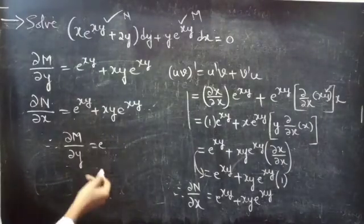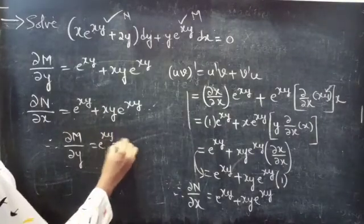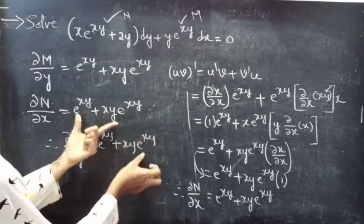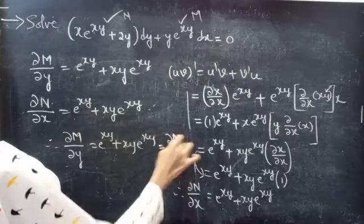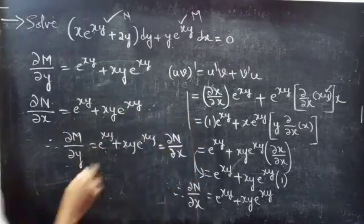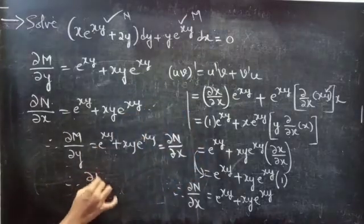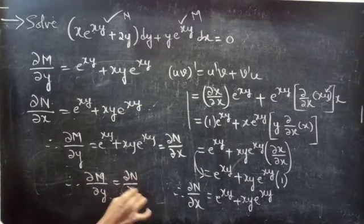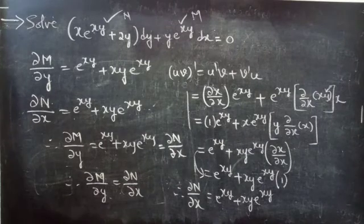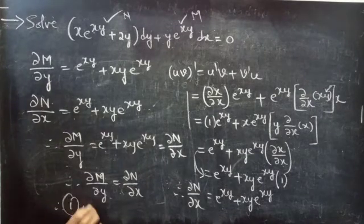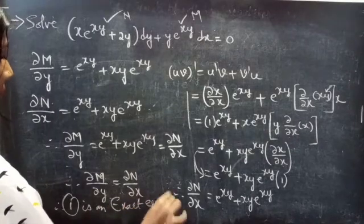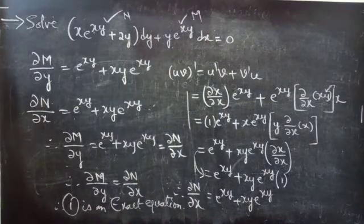So, ∂M/∂y equals e power xy plus xy into e power xy, which is equal to ∂N/∂x. Therefore, partial derivative of M with respect to y equals partial derivative of N with respect to x, and we can say that the given differential equation is an exact equation.